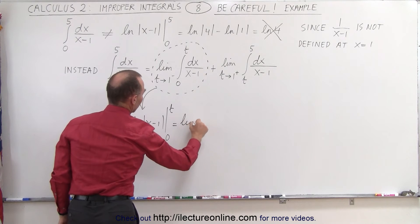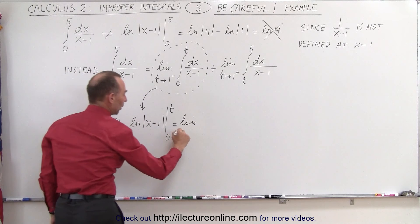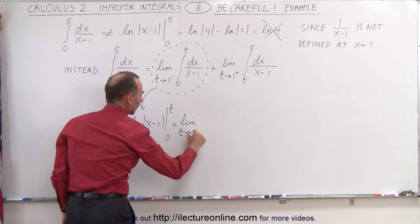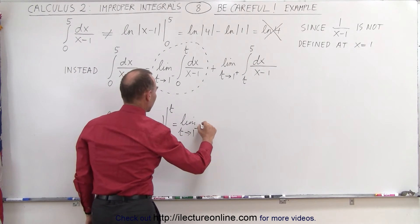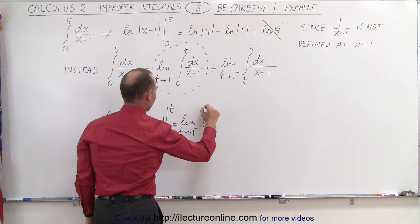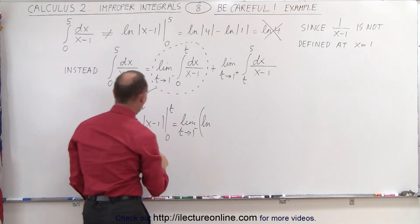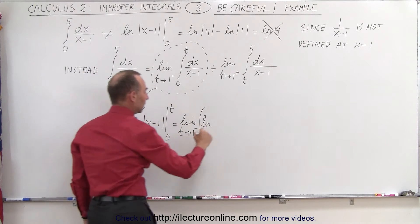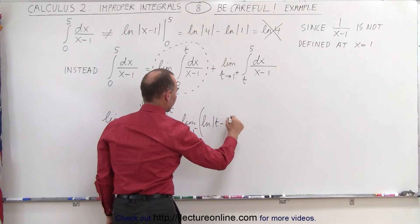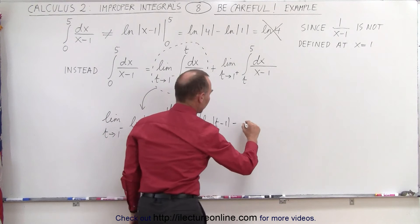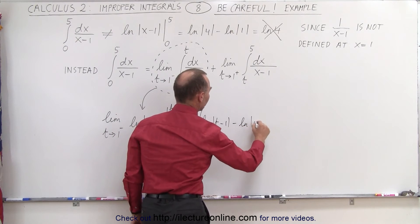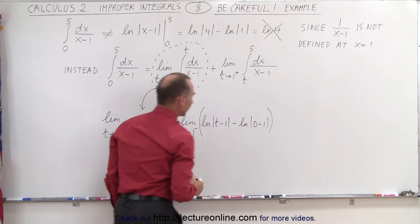So that's still the limit as t approaches 1 from below of this quantity. That would be equal to the natural log of—let's put parentheses around it because first we're going to plug in the upper limit of t minus 1, and subtract from that when we plug in the lower limit, that's the natural log of 0 minus 1.